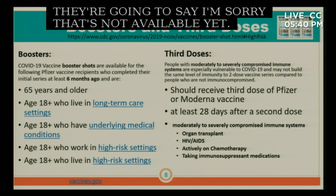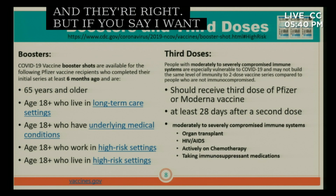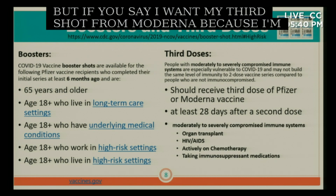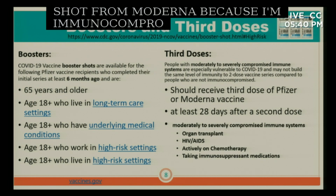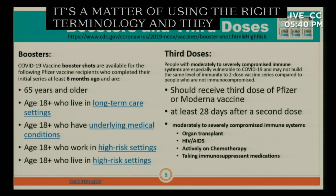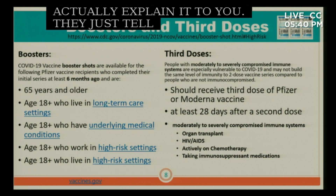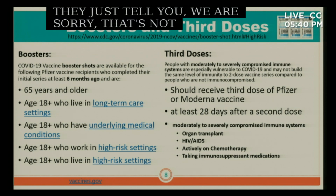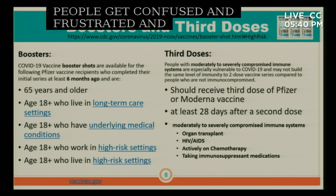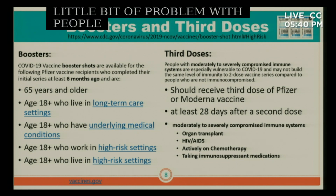If you ask for the wrong thing — say you had Moderna and you ask for a booster for Moderna — they'll say it's not available yet. But if you say you want your third shot for Moderna because you're immunocompromised, you will get your shot. It's a matter of using the right terminology. They don't explain it to you — they just say it's not available yet, which causes confusion and frustration.